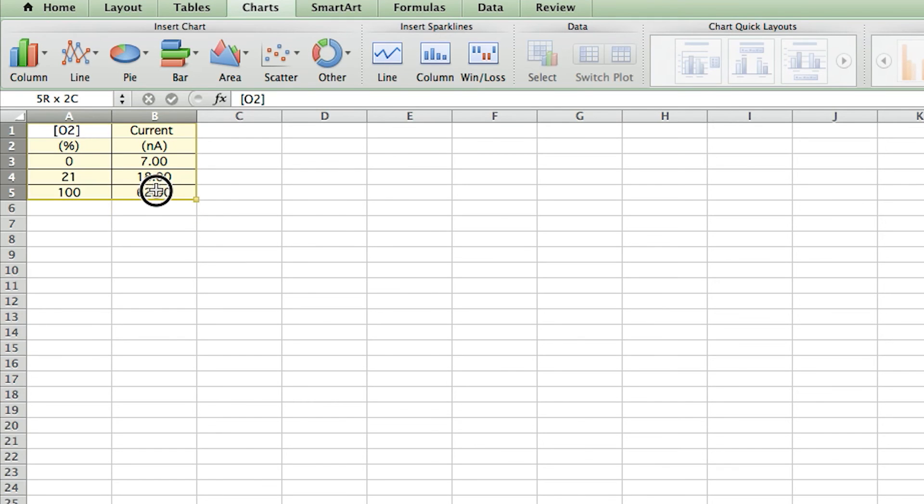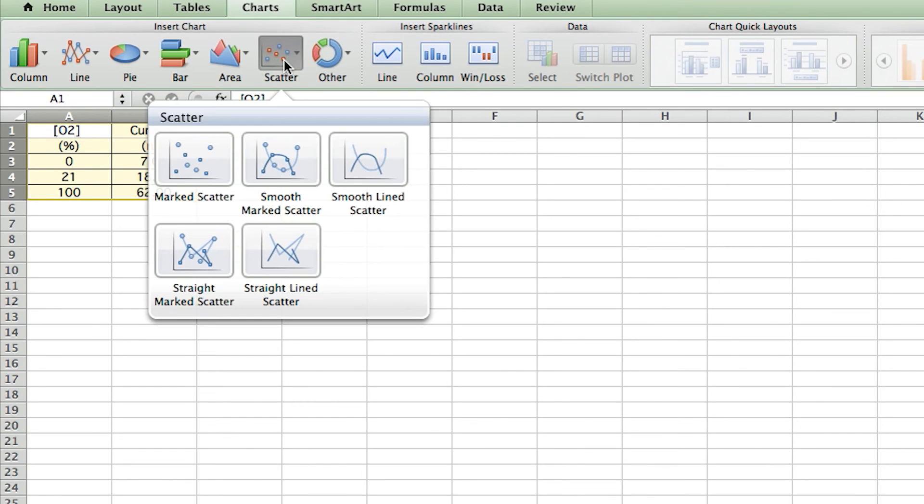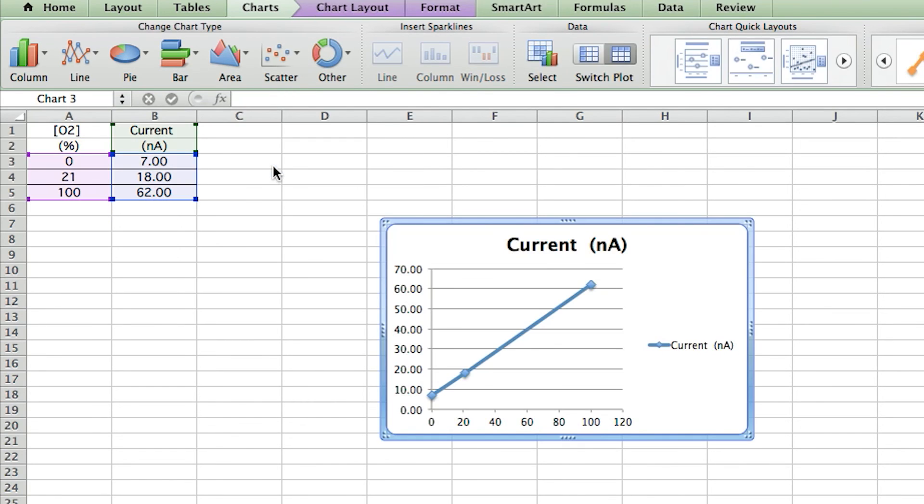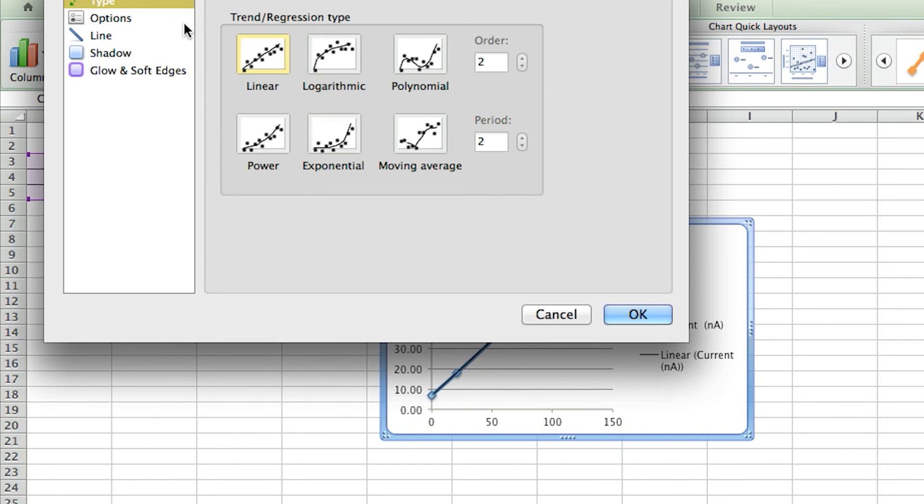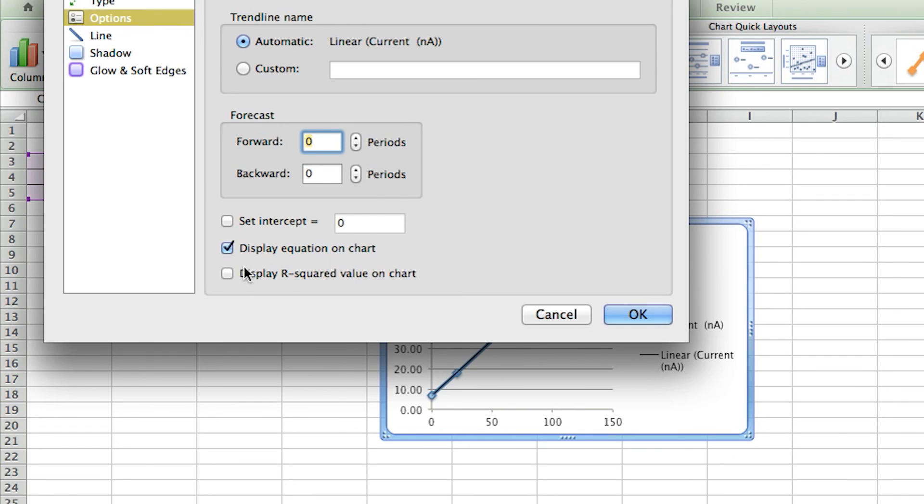Select all the data and use a menu command to generate a scatter plot. Then select the line, right click, and choose add trendline. Select linear, select display equation on chart, and display R value on chart.